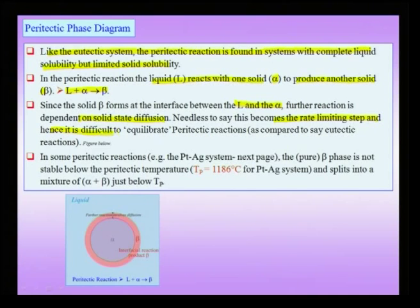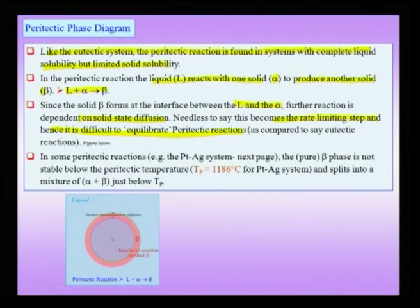Because solid-state diffusion is the rate-limiting step, it is difficult to equilibrate peritectic reactions. When drawing phase diagrams we want to be as close to equilibrium as possible. This is easy to achieve for eutectic systems, but difficult for peritectic reactions due to the involvement of solid-state diffusion.